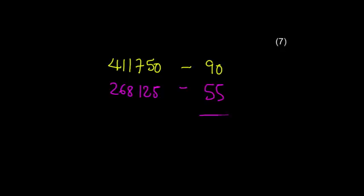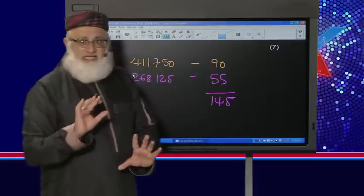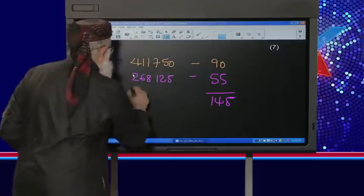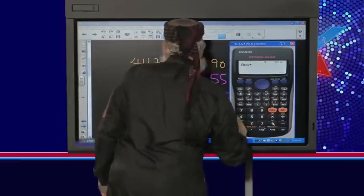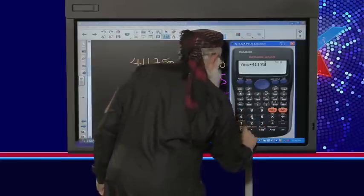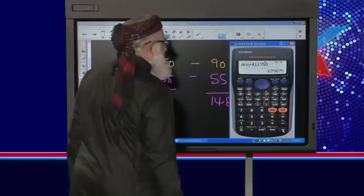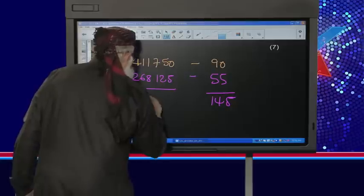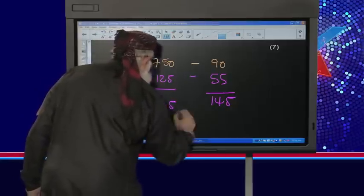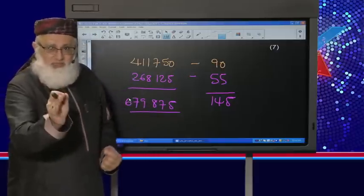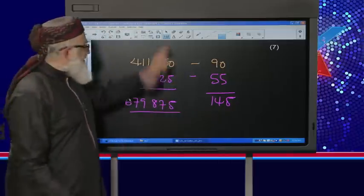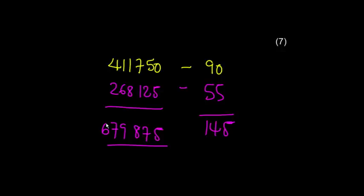Let's add: 268,125 plus 411,750 gives me a total for 145 units. And my answer is 679,875. I've worked out the value of my TV sets using the periodic stock system and the FIFO method of valuation. The secret to FIFO, guys, is bottom up — start at the bottom of your table and do your calculation.